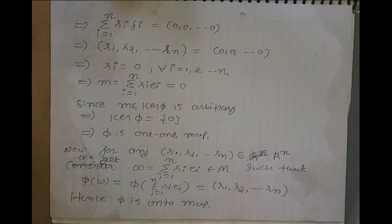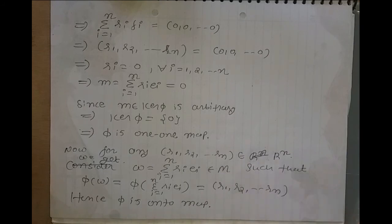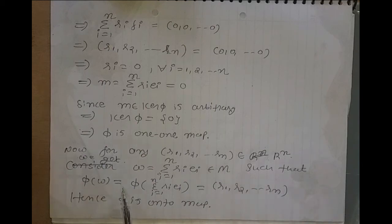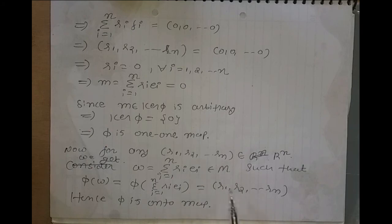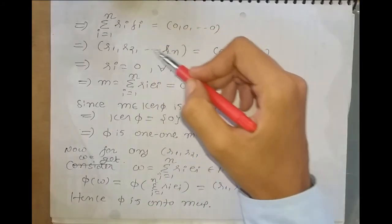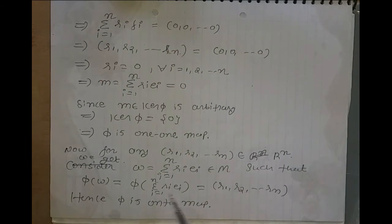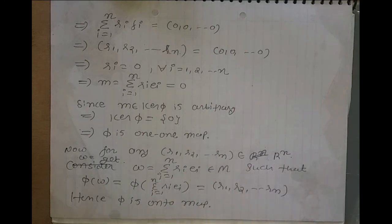Now we show φ is onto. Consider any arbitrary element (R1, R2, …, Rn) in R^n. Then W = Σ Ri·Ei belongs to M, and φ(W) = φ(Σ Ri·Ei) = (R1, R2, …, Rn). Hence for any element from R^n we get a pre-image in M, so φ is onto.